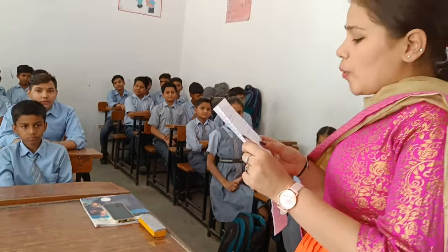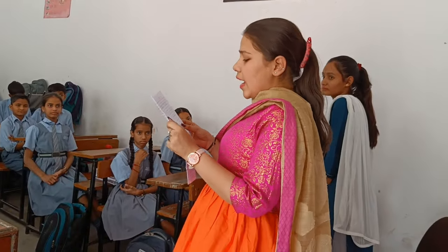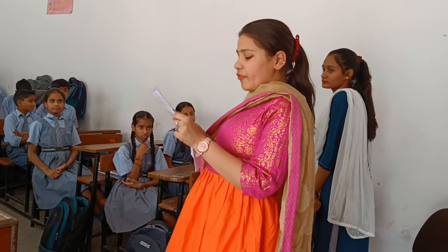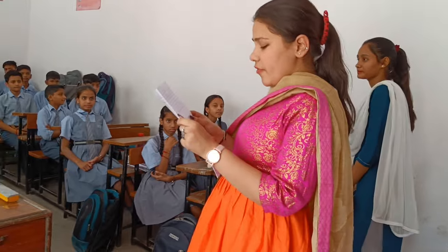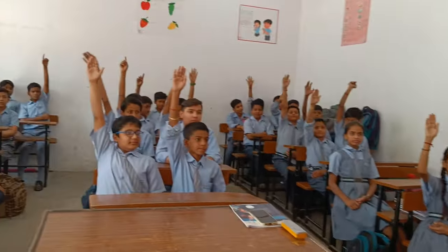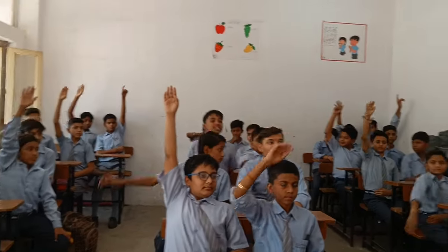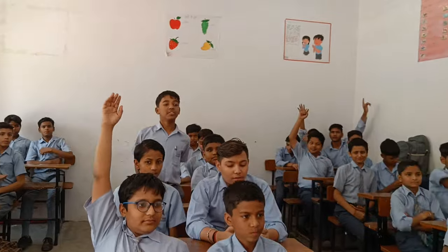How many assembly constituencies are there in the NCT of Delhi? Options: 65, 75, 70, 80. The answer is 70.